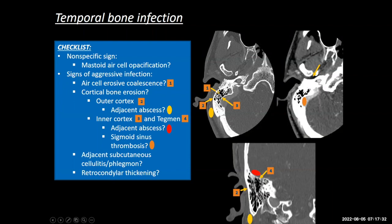In addition, you have to look at all the cortex of the temporal bone, especially the mastoid portion — the outer cortex and the inner cortex — because breaches, dehiscence, and erosion of those cortices is a means of spread into the adjacent tissues. You can get subcutaneous abscesses, Bezold abscess can occur from spread inferiorly through cortex erosion, and you can get infectious thrombosis of the sigmoid sinus if it extends medially through the inner cortex, and intracranial abscesses or subdural empyemas.